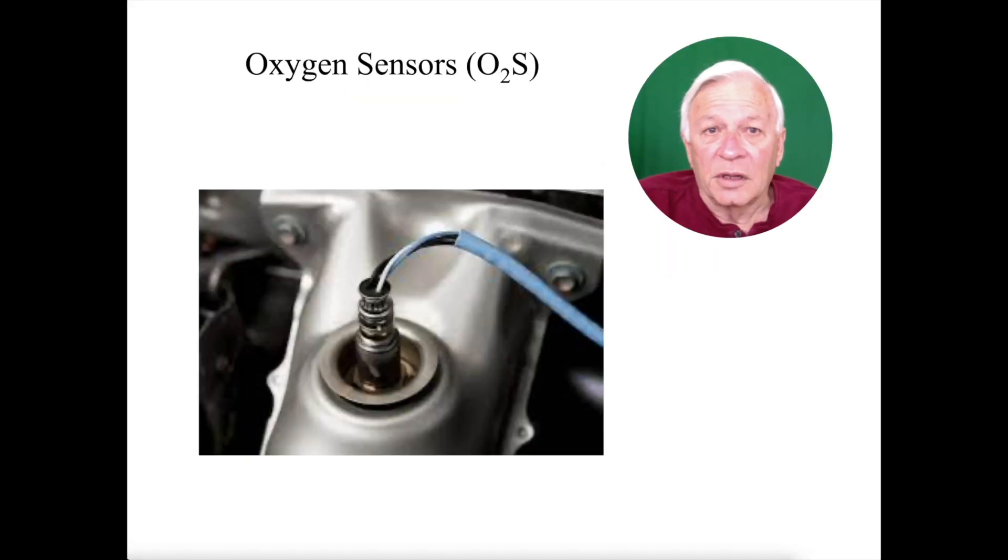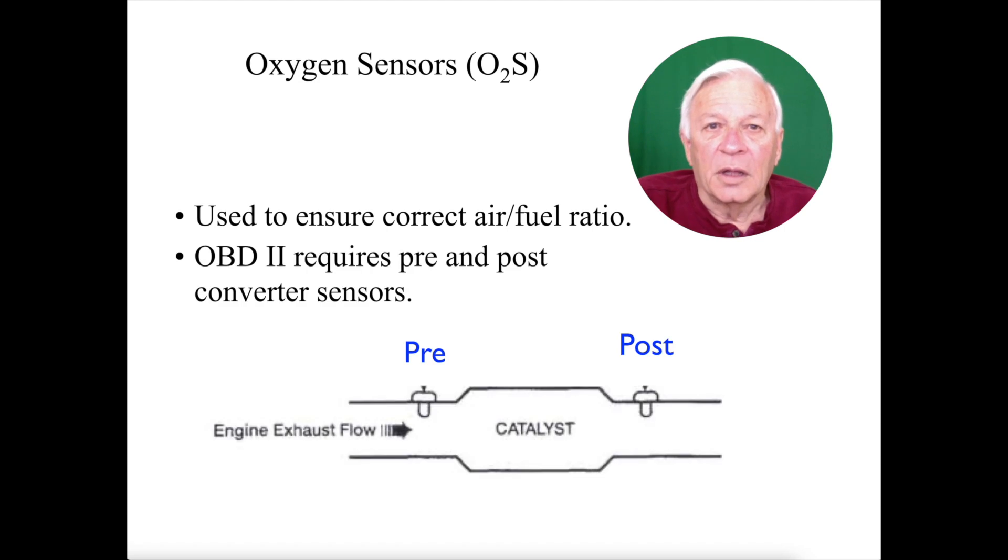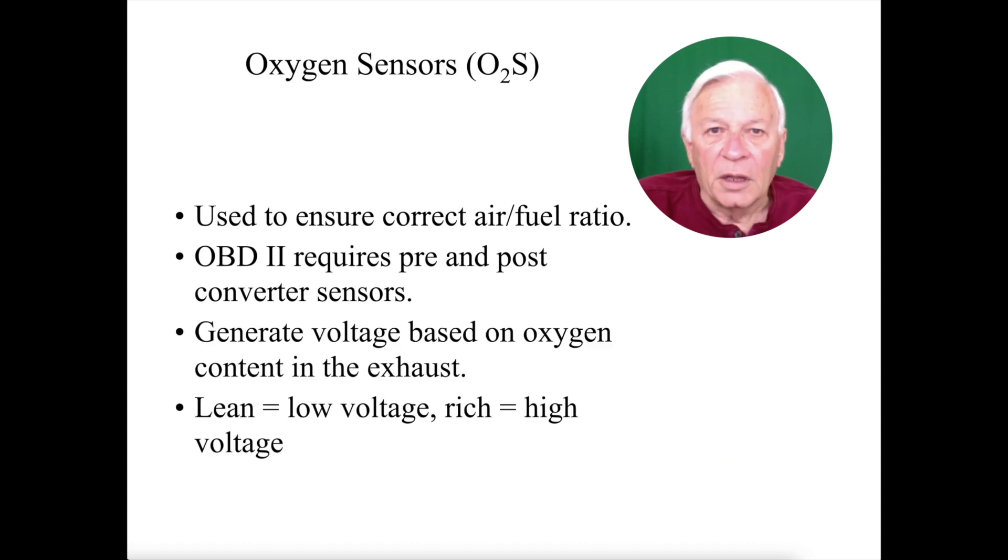Oxygen sensors do what their name says: they sense, measure, and report the amount of oxygen left over in the exhaust after combustion takes place. They are used to ensure the correct air-fuel mixture to make sure our air-fuel mixture is balanced. OBD2 requires both pre and post converter sensors.